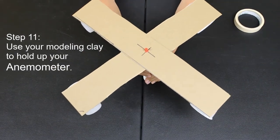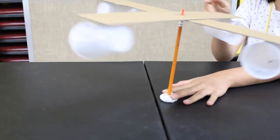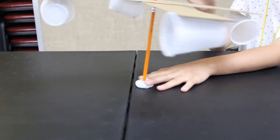Your modeling clay will hold up your anemometer, and now it can spin. It should look something like this.